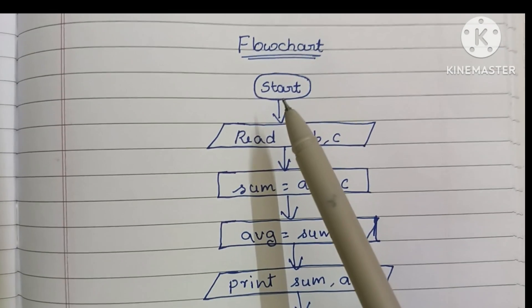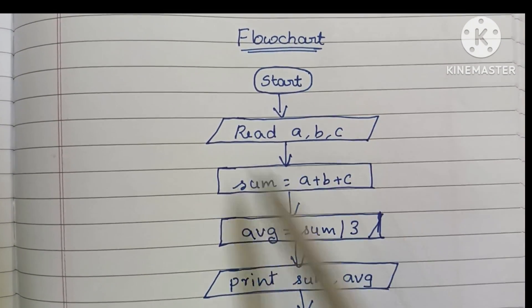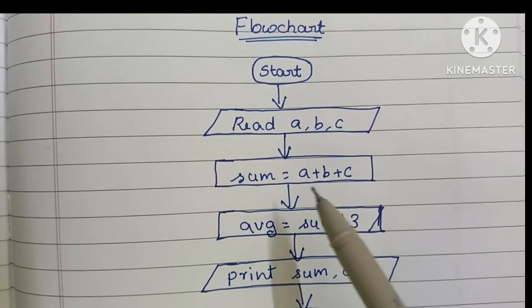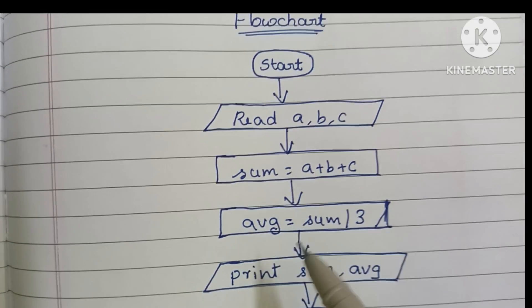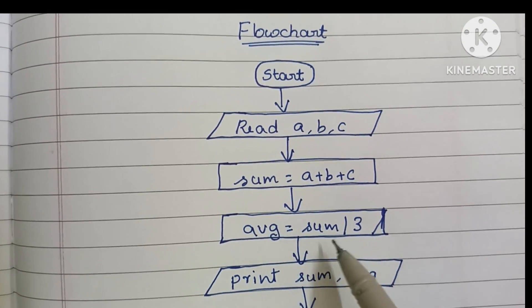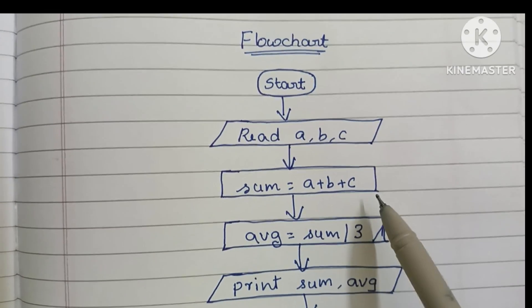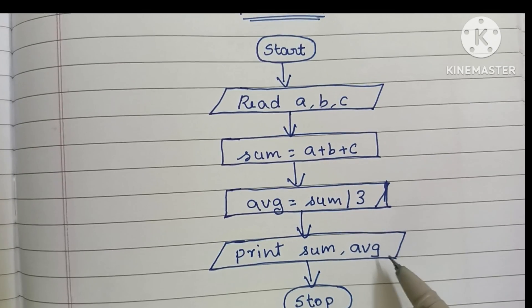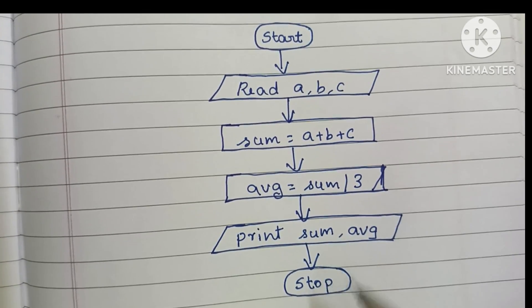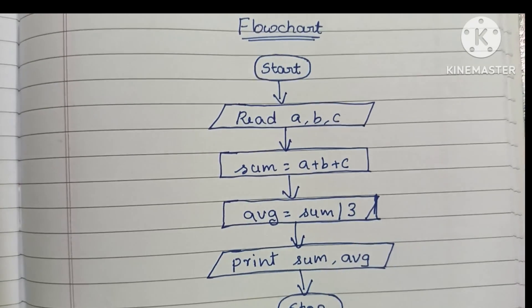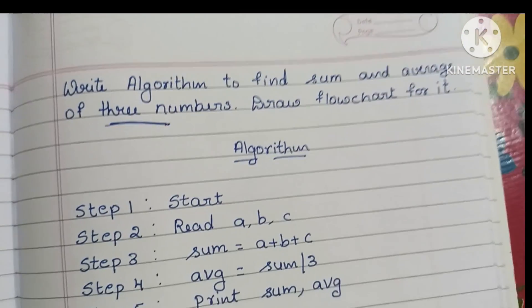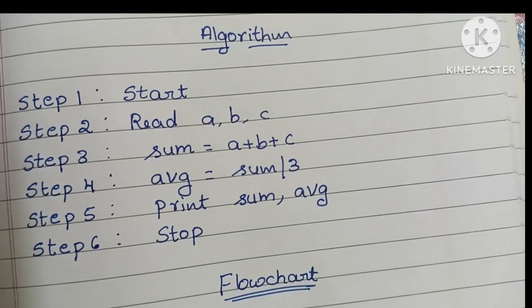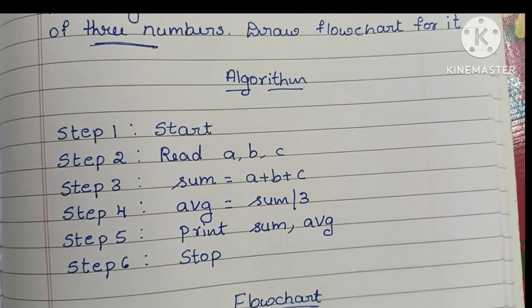To summarize the flowchart: start with the start statement in an oval, read a, b, c in a parallelogram, calculate sum = a + b + c in a rectangle, calculate average = sum / 3 in a rectangle, print sum and average in a parallelogram, then stop using the stop statement. Thank you for watching — if you like the video, please like and subscribe.